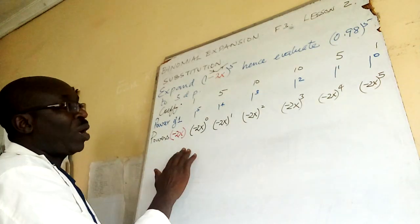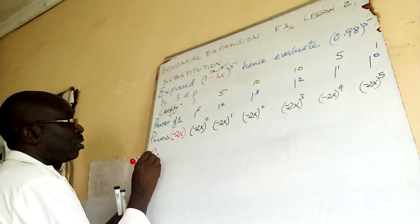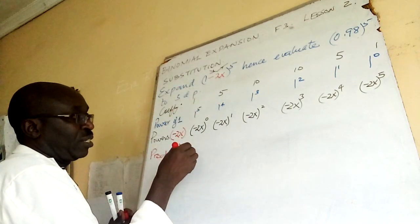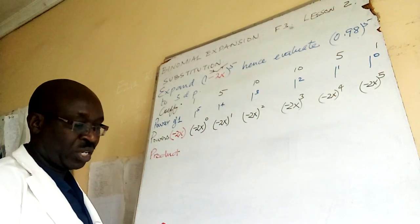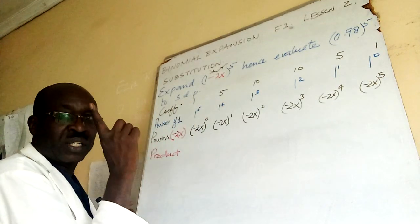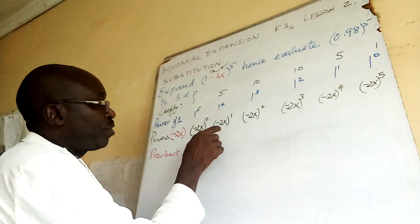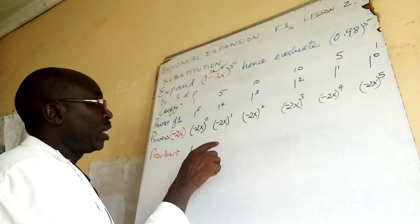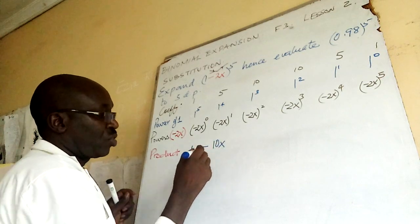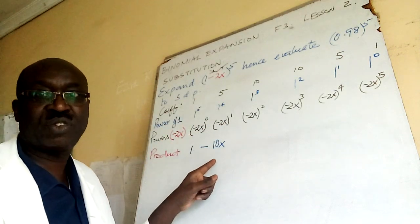Once you have that, the next thing we do is product. We have to get the product vertically. What is our product? 1 times 1, anything to power zero is 1, so what do I write here? 1. Now I told you if you have a bracket with an odd power, then I retain the minus, so it will be minus 10x. This is 5 times 1 times 2x; that is what gives me 10x.